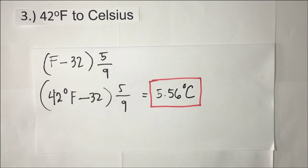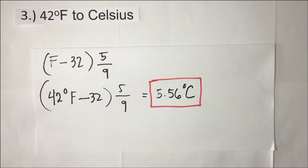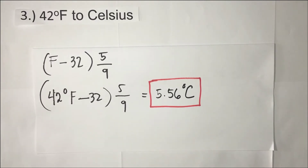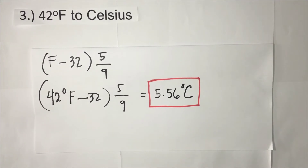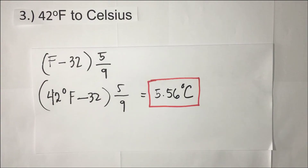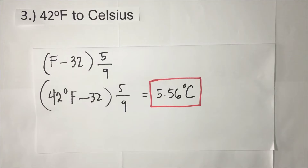Let us check our answer: 42 minus 32 times 5 over 9. The answer is confirmed: 5.56 degrees Celsius.